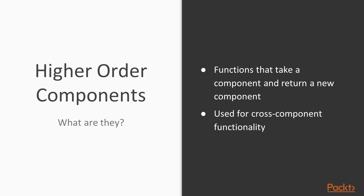The example that we will see is about adding an outline to a component. We can add an outline to a button and we can add an outline to a text input or whatever else. But in both cases this is a cross-component functionality, so we add an outline to both components.